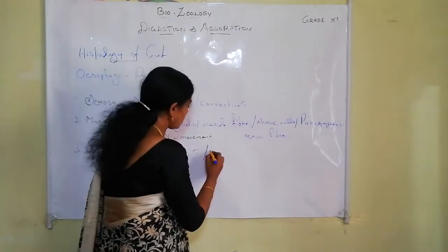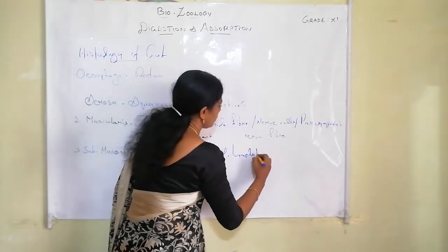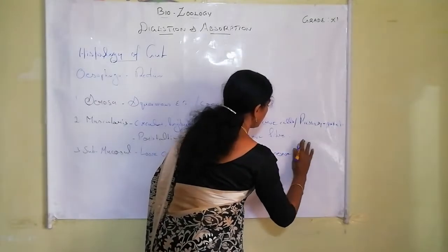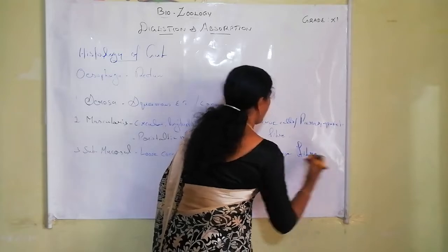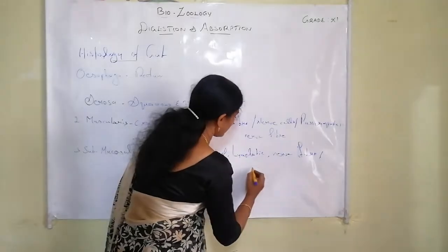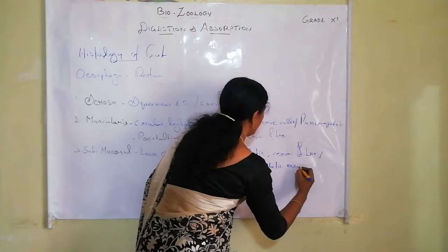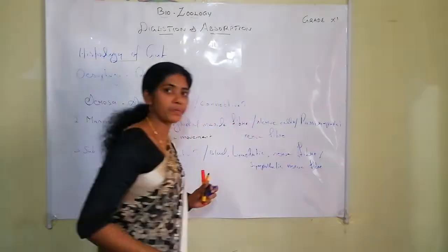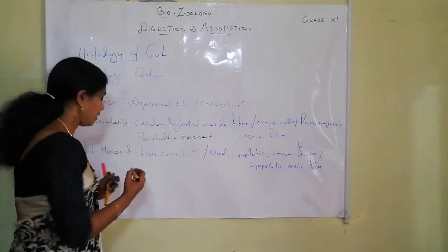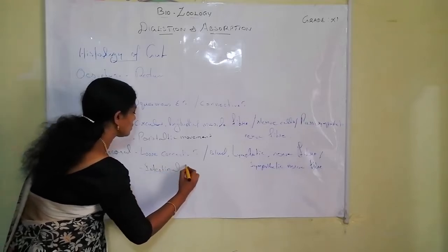The submucosal layer also consists of blood vessels, lymphatic vessels, and nerve fibers. It especially contains sympathetic nerve fibers, which are responsible for controlling intestinal secretion.